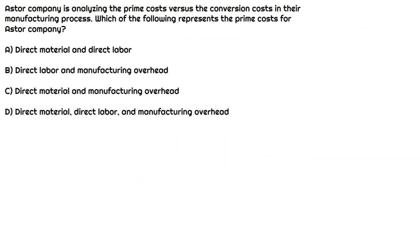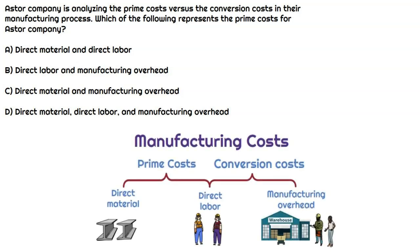This question is focused on prime costs versus conversion costs, and we specifically need to understand what the prime costs for Astor Company would be. Prime costs consist of direct material and direct labor. Conversion costs also include direct labor but add manufacturing overhead — the costs to convert raw materials into a finished product. Since this question only asks for prime costs, the answer consists of direct material and direct labor.